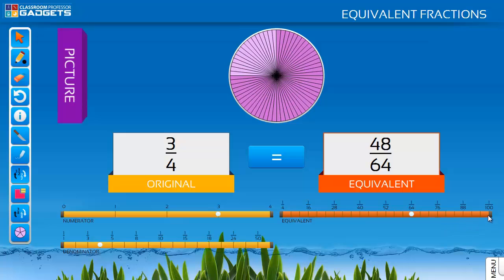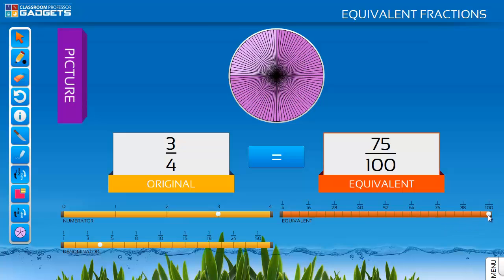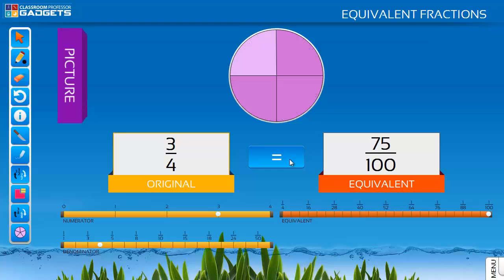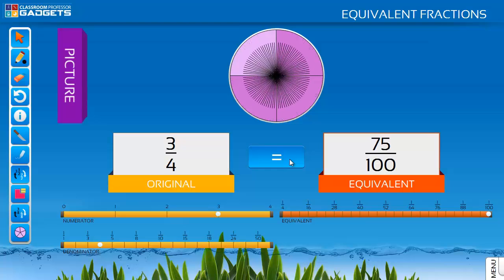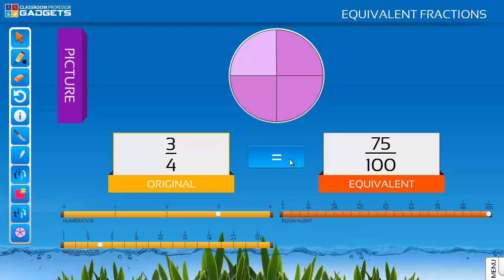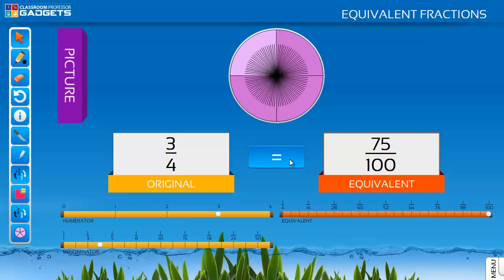All equivalent fractions to hundredths are available. Choosing hundredths allows for the introduction of converting common fractions to decimals. Toggle between the two fractions and allow time for your students to process that three quarters is in fact 75 hundredths.